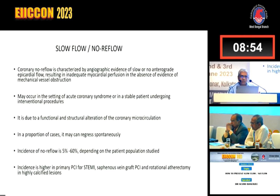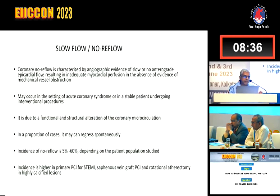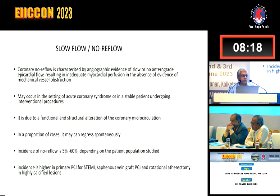In a proportion of cases, it may regress spontaneously. Regarding incidence, it's about 5% to 60% — a huge, vast range — depending on the patient population studied. For example, if you only study patients who had an atherectomy done, the incidence may be very high, as opposed to a stable patient treated with a balloon. Incidence is higher in primary PCI for STEMI, saphenous venous graft PCI, and rotational atherectomy in highly calcified lesions.